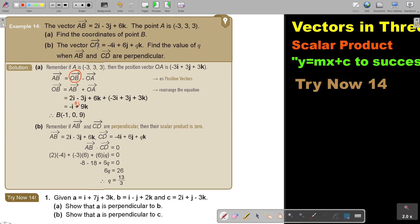And then the vector CD, find the value of Q when AB and CD are perpendicular. Now, can you remember what's perpendicular? That's the property. If it's perpendicular, then I know that the scalar product will be equal to 0. There's AB, there's CD. I know that if it's perpendicular, the scalar product will be 0. So, I put it equal to 0, and then I form a linear equation, and I find that the value of Q is 13 over 3.